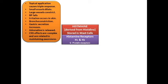Bronchoconstriction occurs when histamine is released. In animal studies, histamine is injected in guinea pigs to study constriction of the tracheobronchial tree, and it can also be given as an aerosol. That is how bronchoconstriction relates to histamine. Gastric secretion is increased with histamine — a large amount of acid is released — and this is mediated by H2 receptors. We have various drugs which block this release by blocking the specific H2 receptors.